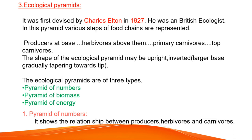Ecological Pyramids. They were first devised by Charles Elton in 1927, a British ecologist. In these pyramids, we can see the various types of food chains with producers at the base, herbivores above them, then primary carnivores and top carnivores. The shape may be upright or inverted. Ecological pyramids are of three types: pyramid of numbers, pyramid of biomass, and pyramid of energy.